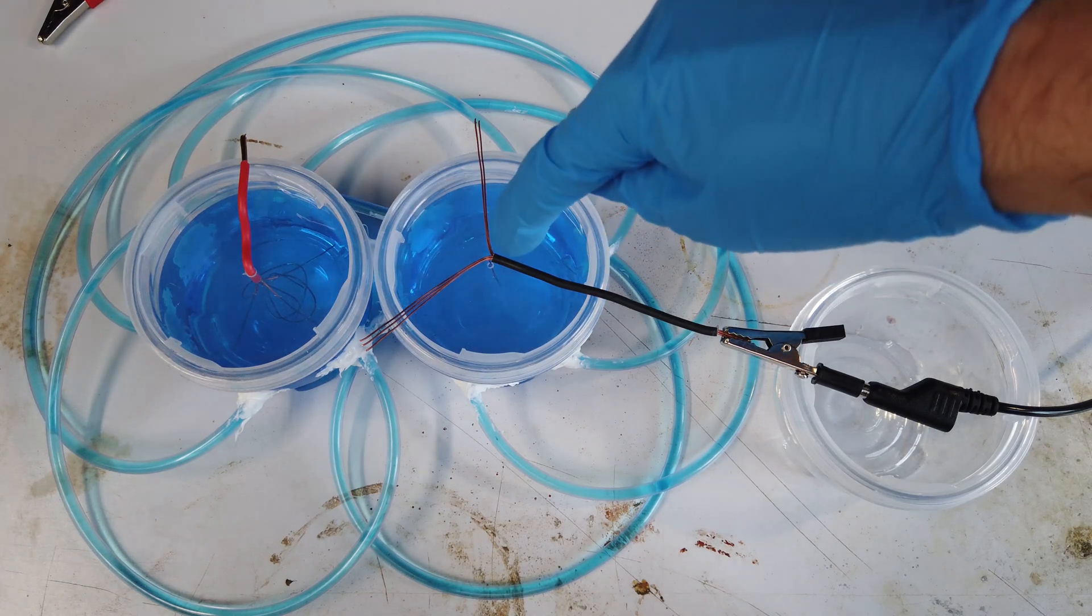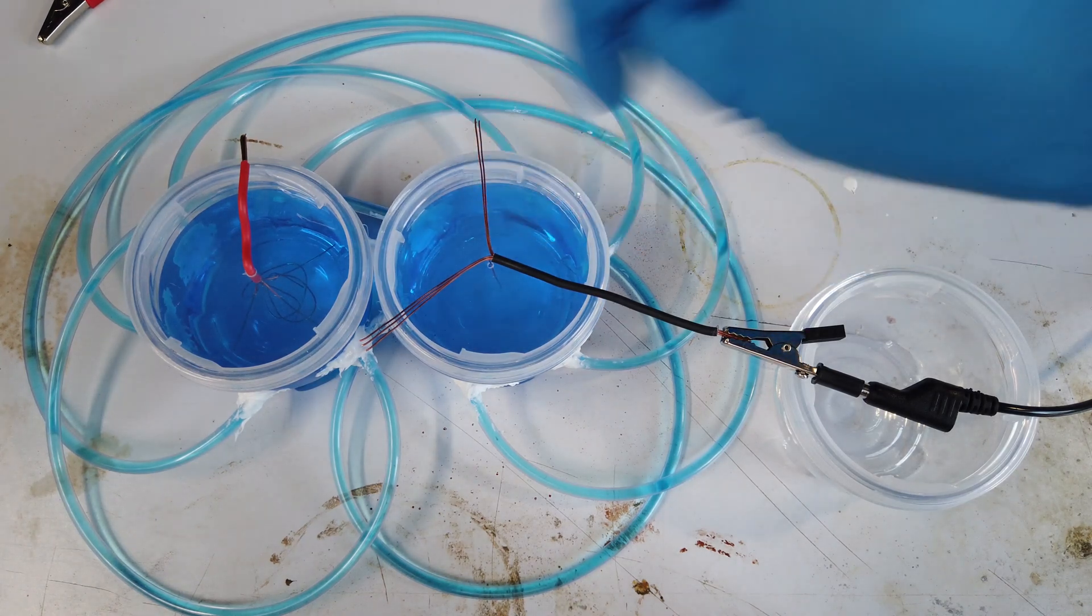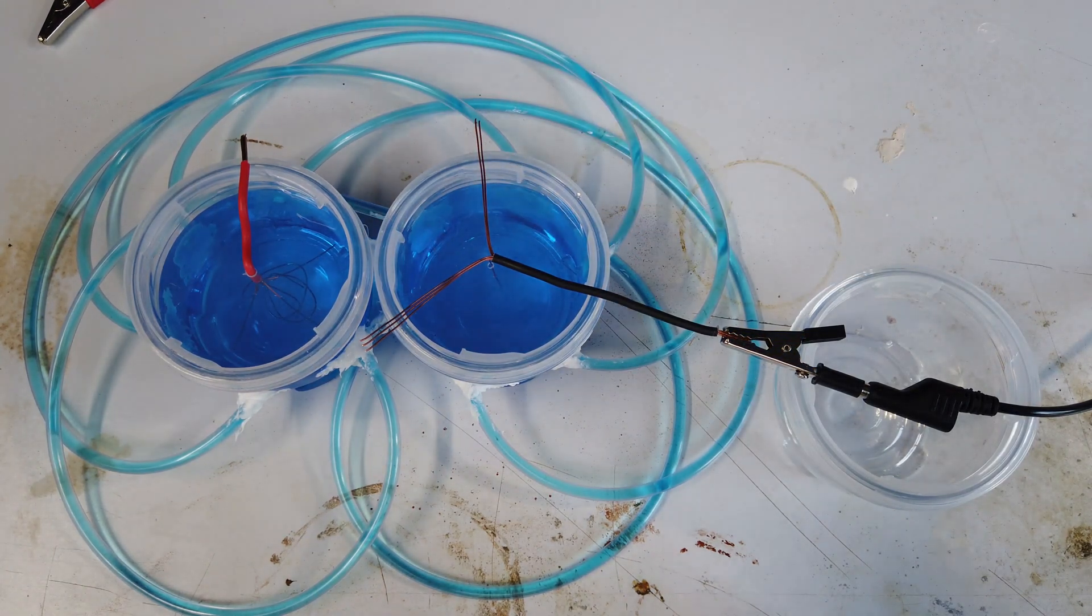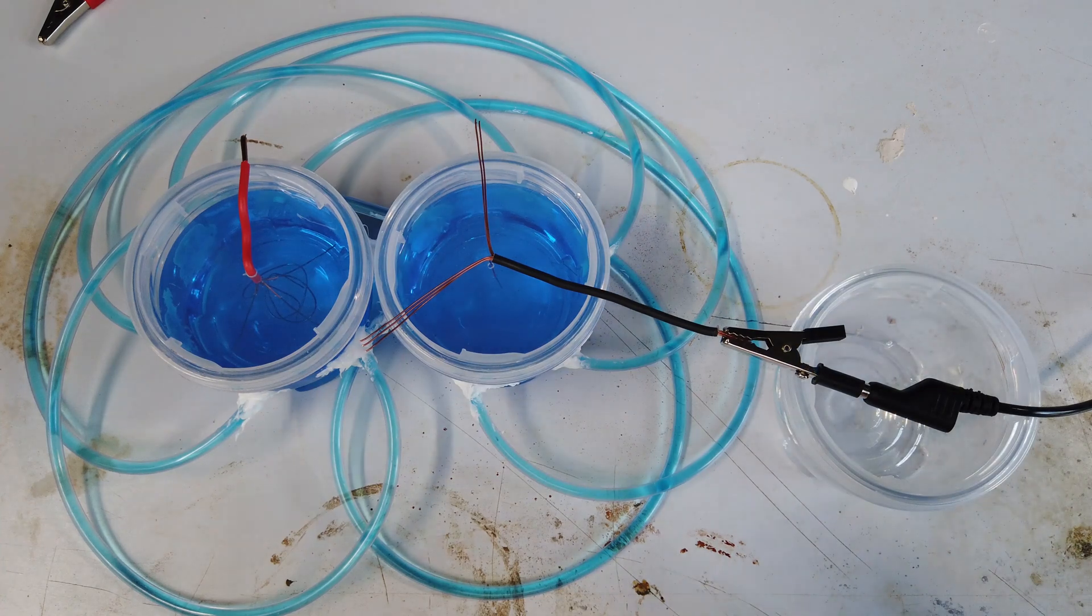We have our electrodes in there. This is the cathode, this is the single wire that will grow our nice copper crystals, hopefully.